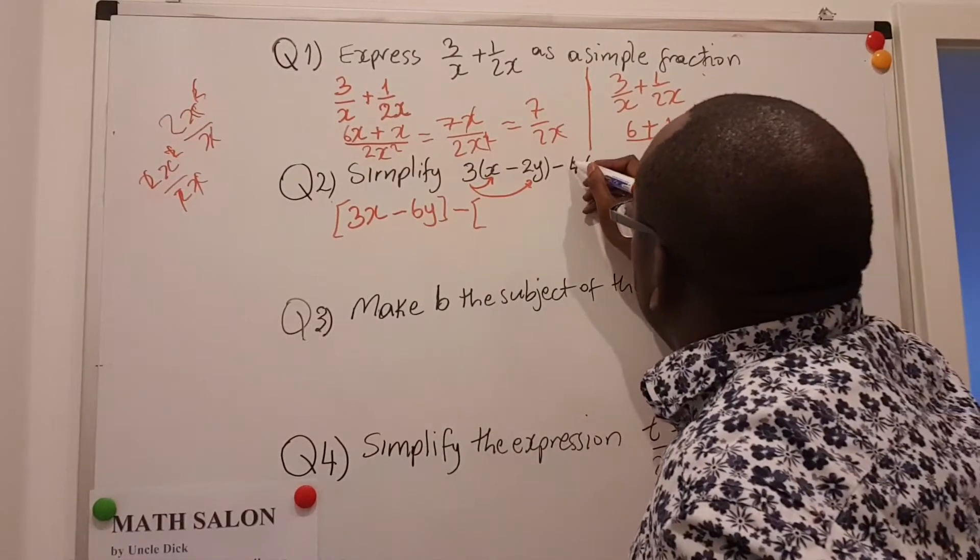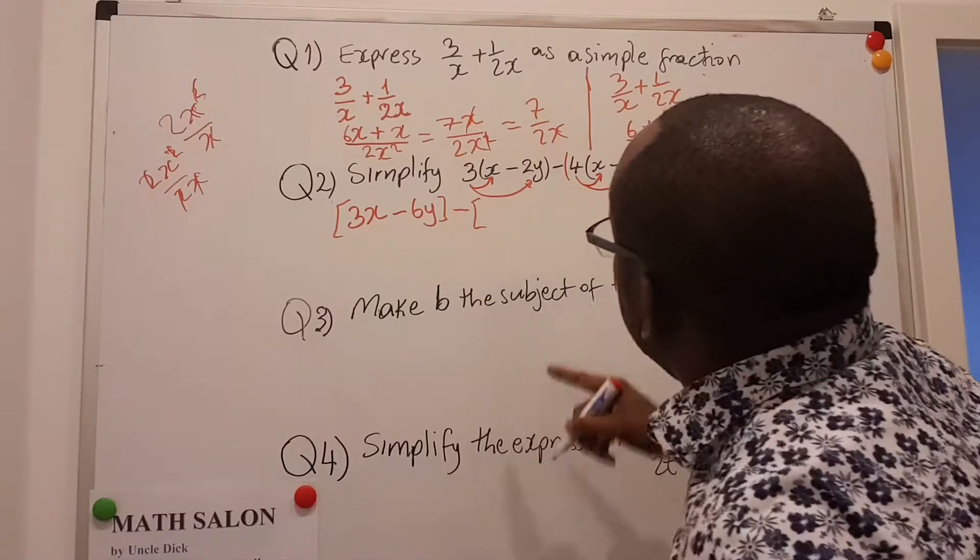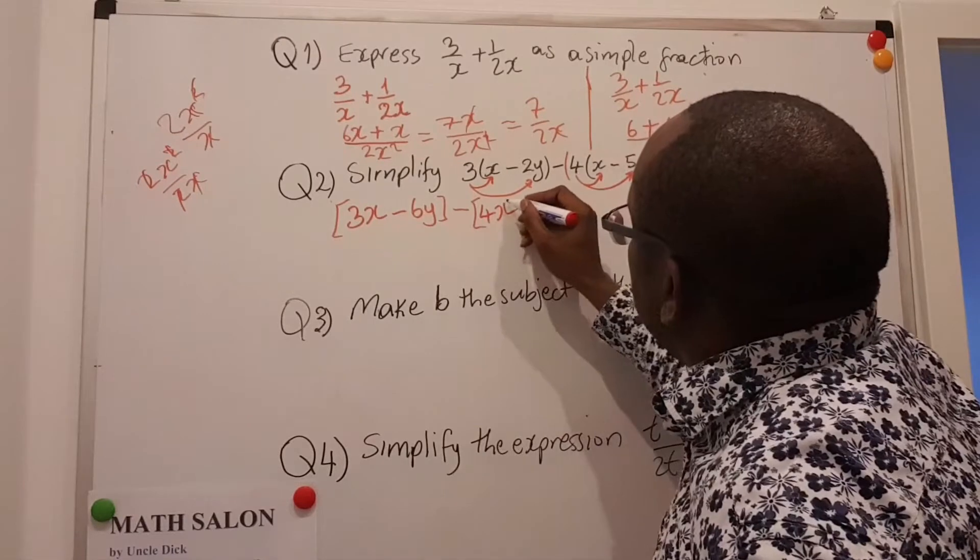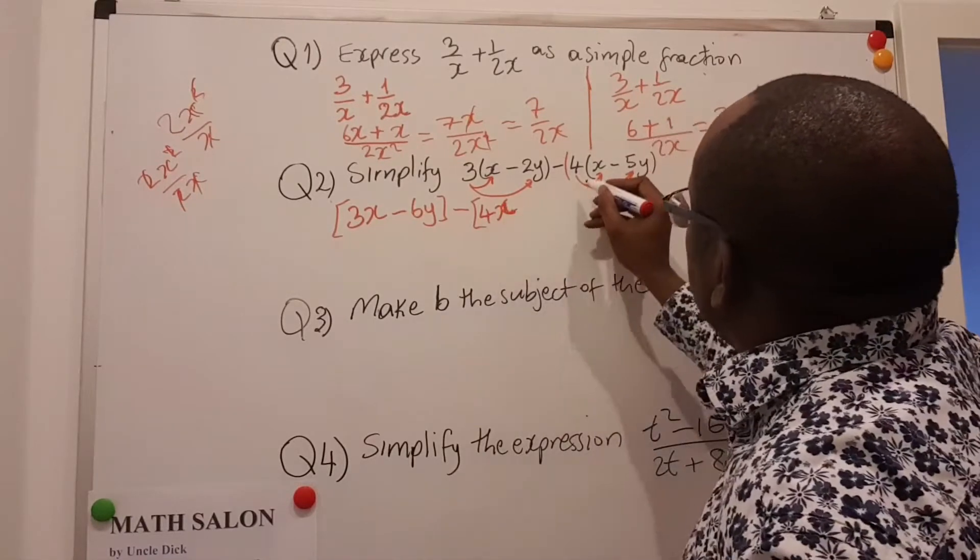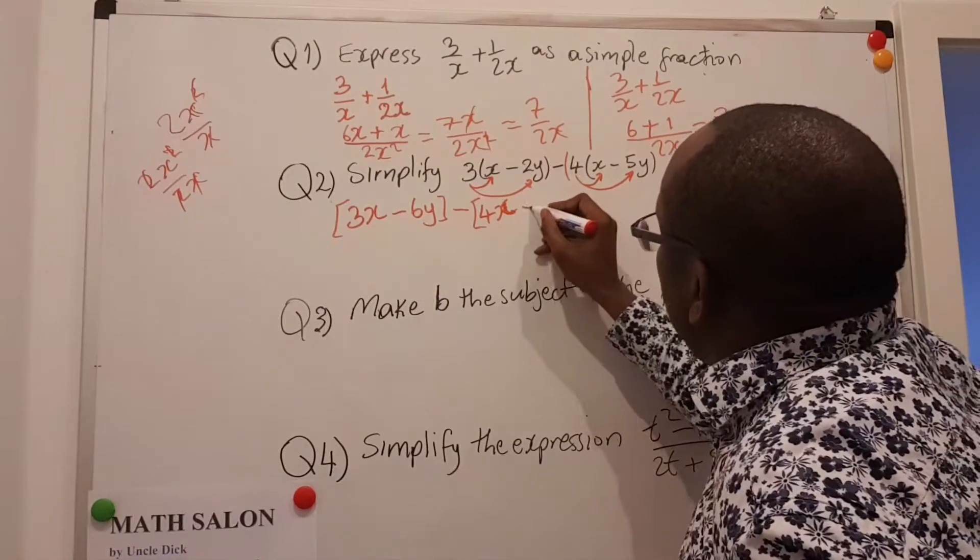So I will take the plus 4 and I multiply that. Plus 4 and I multiply that. So 4 times x is 4x. 4 times minus 5y is minus 20y.